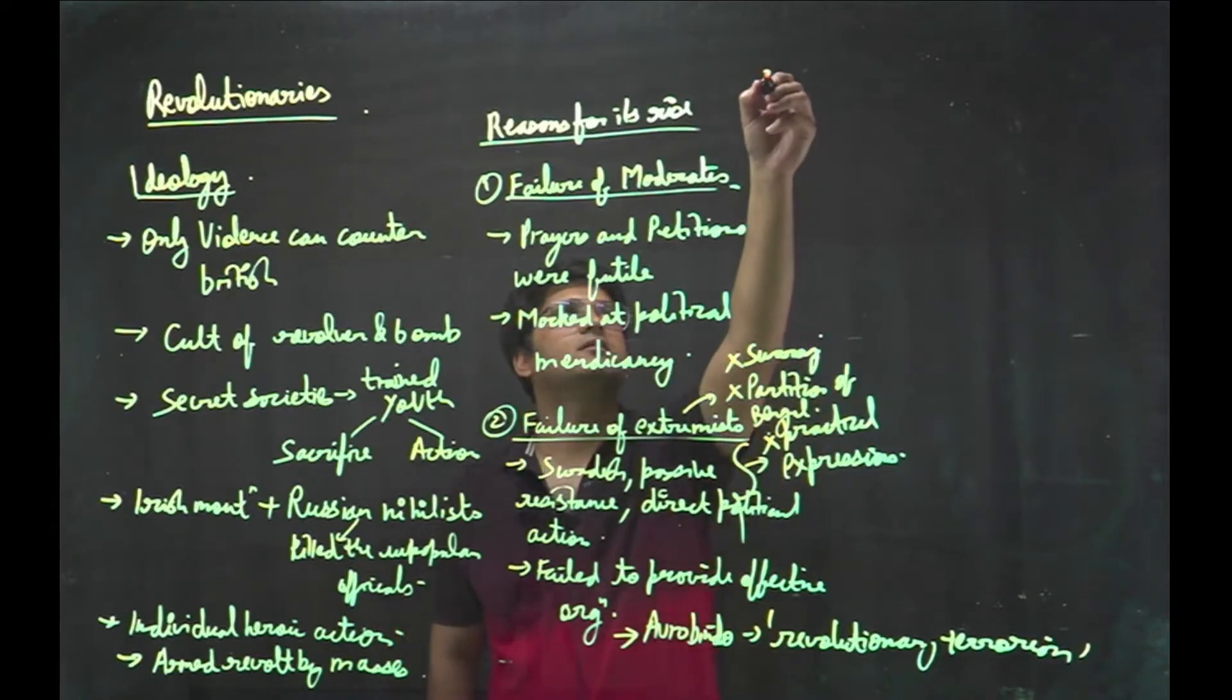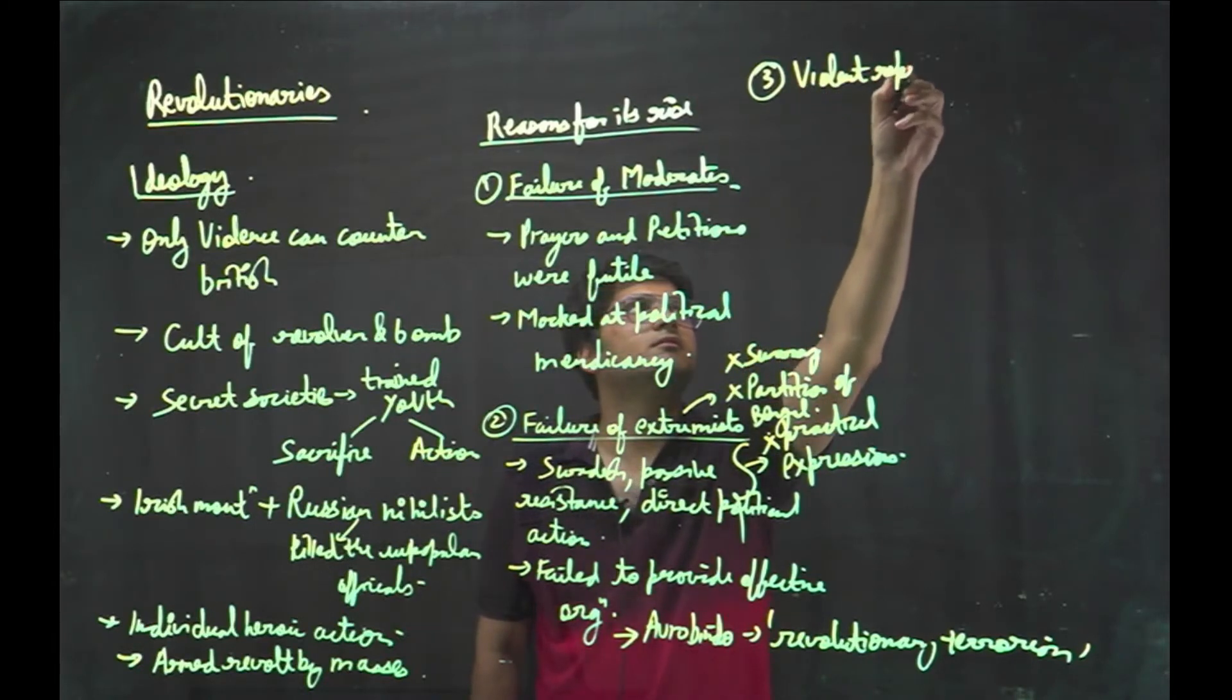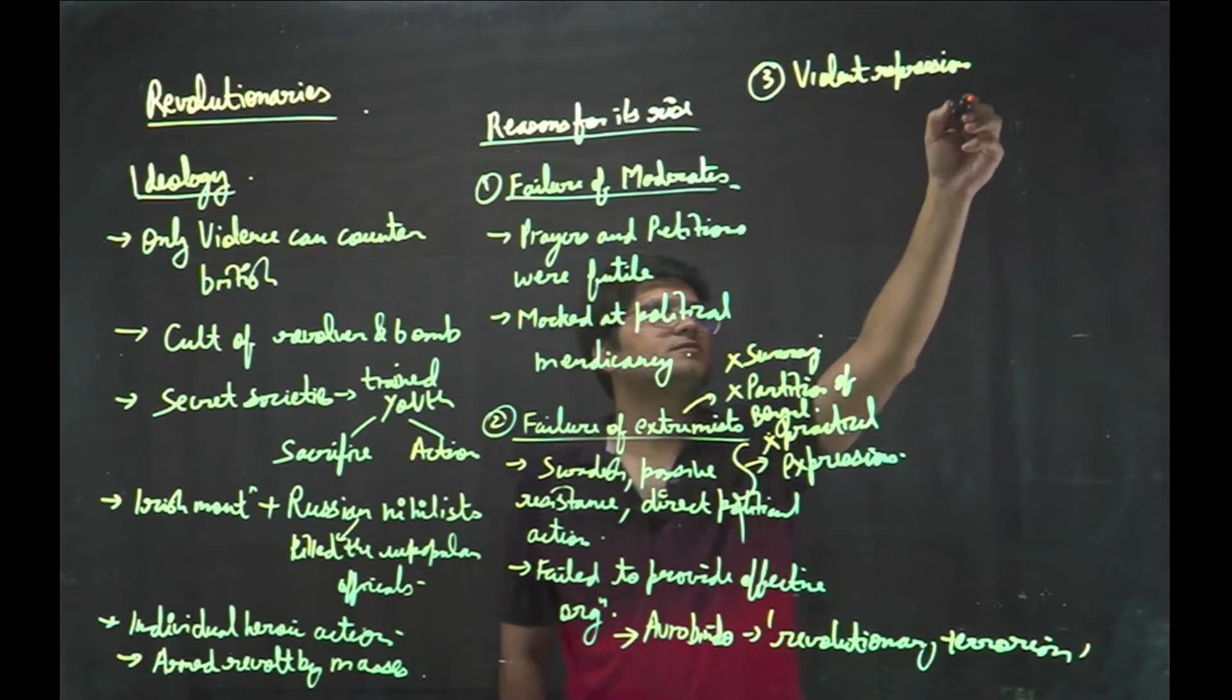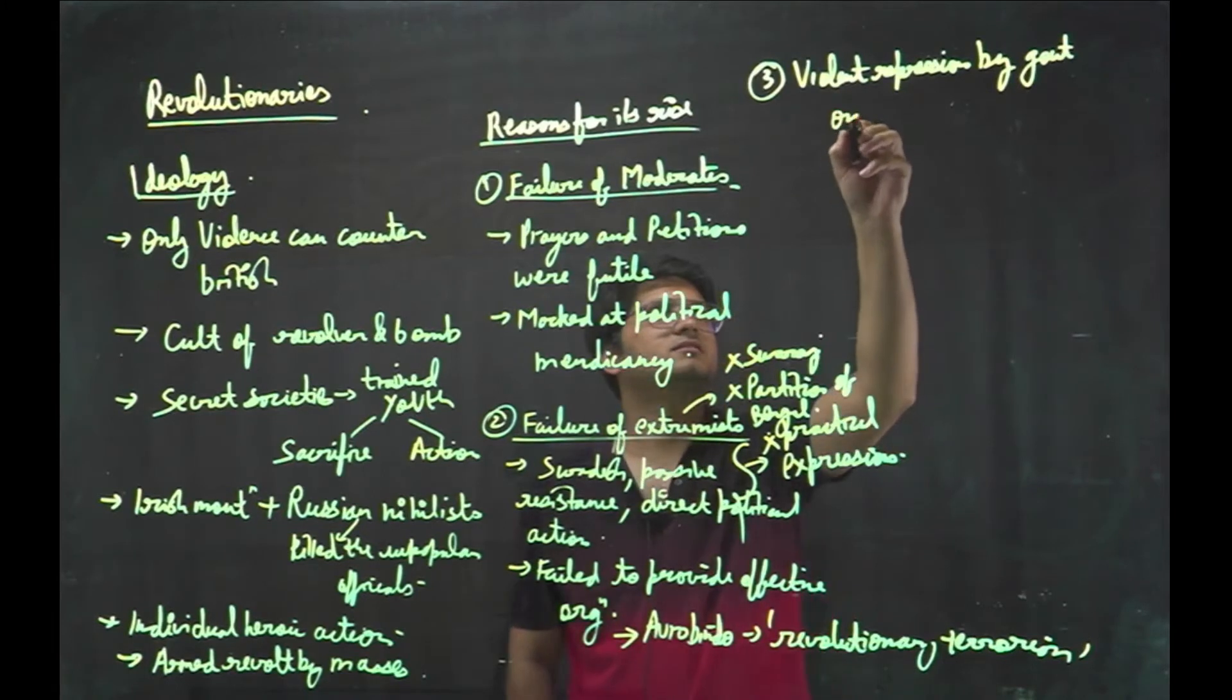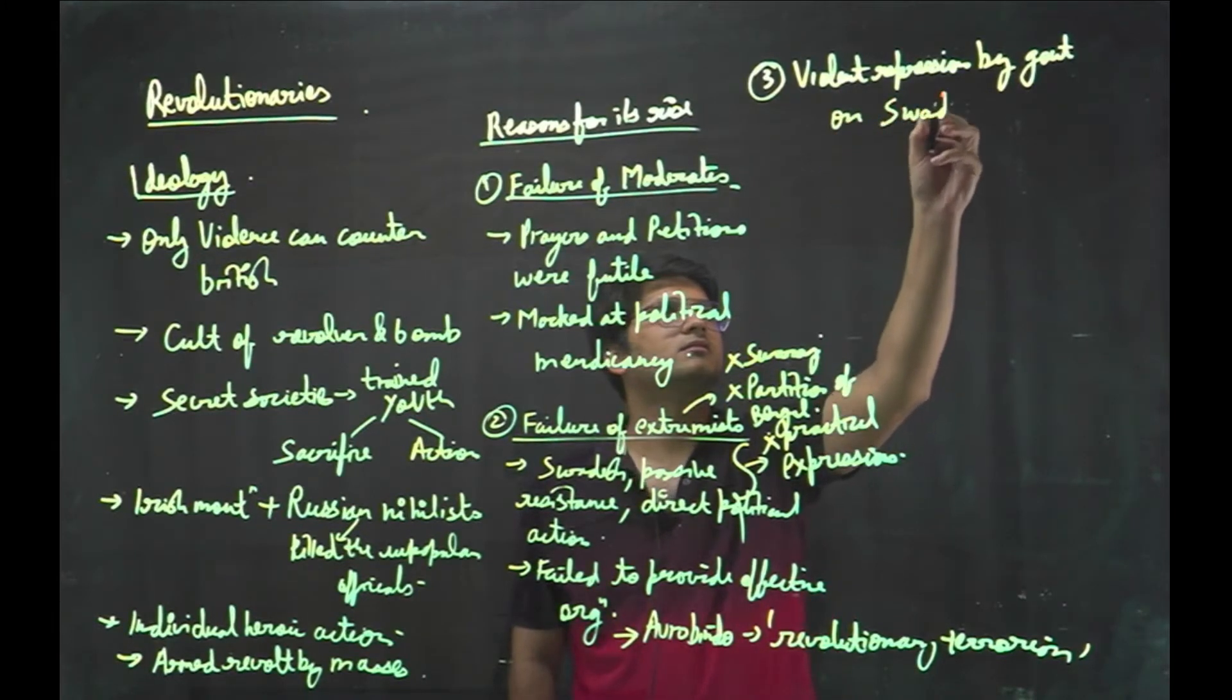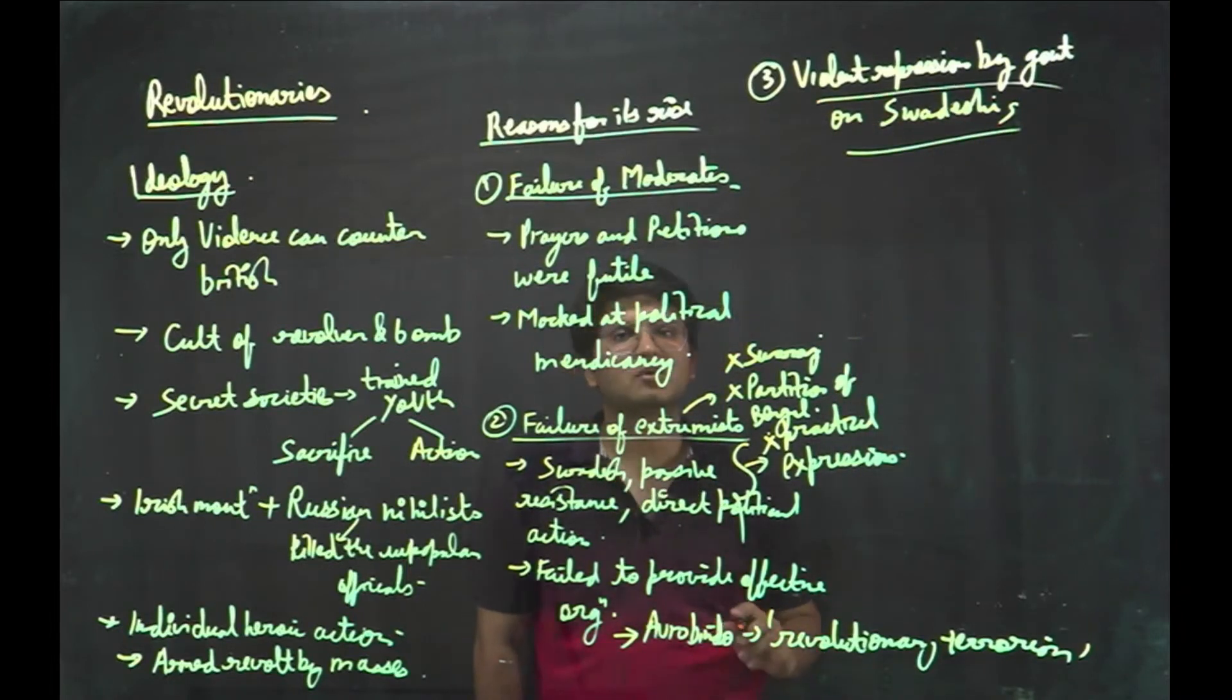Third factor: violent repression by government on Swadeshis. So government came down heavily on Swadeshis. These were the factors for the rise of revolutionaries. They believed that violence could be countered by violence, and if government is repressing violently, then cult of revolver and bomb should be there.